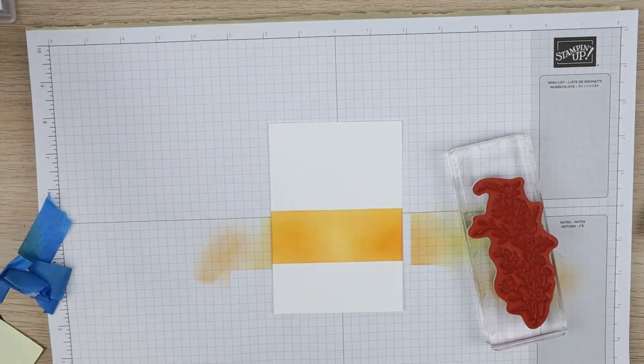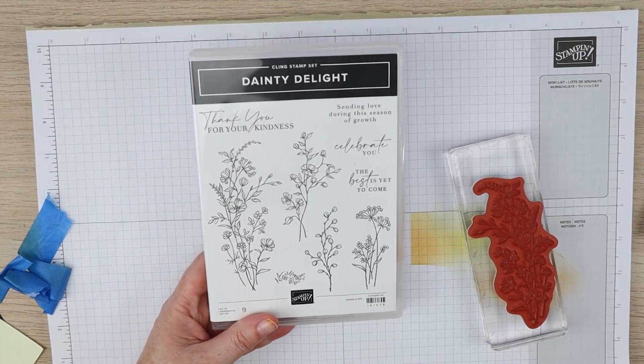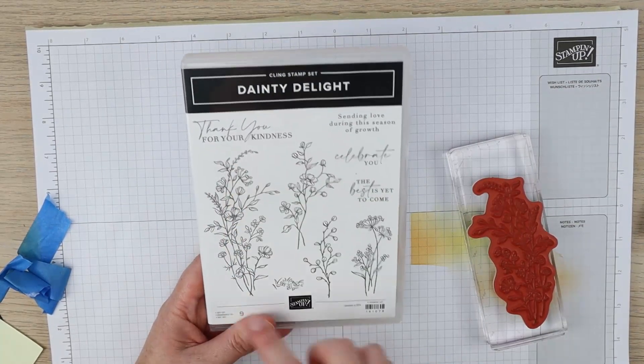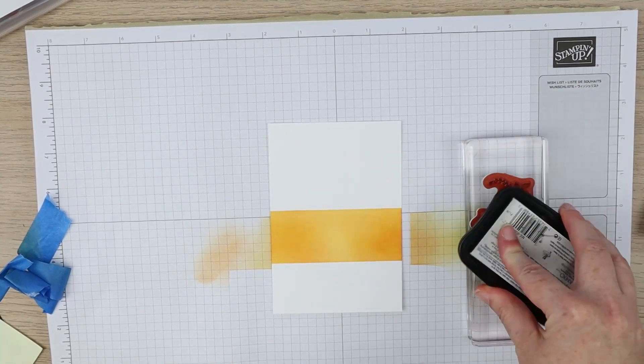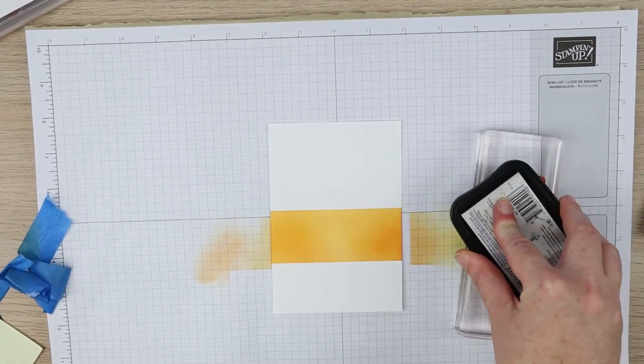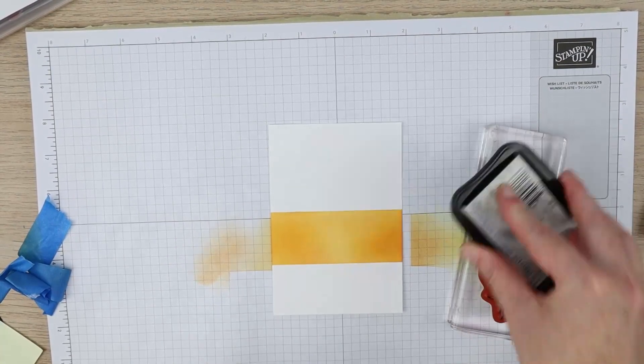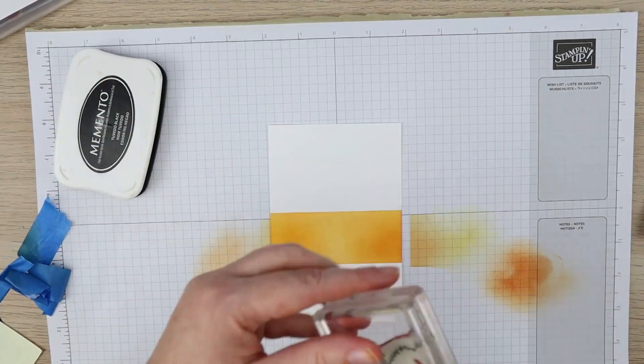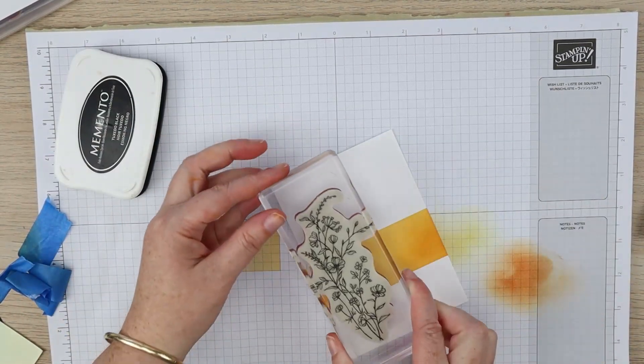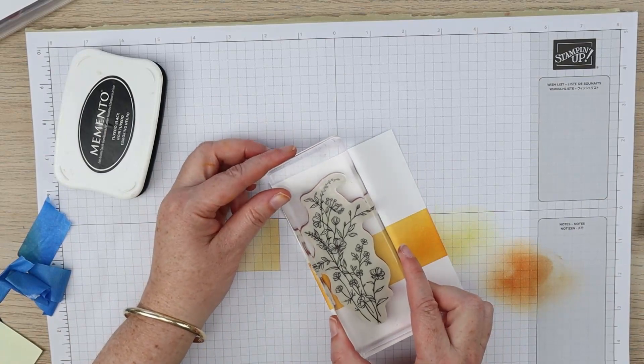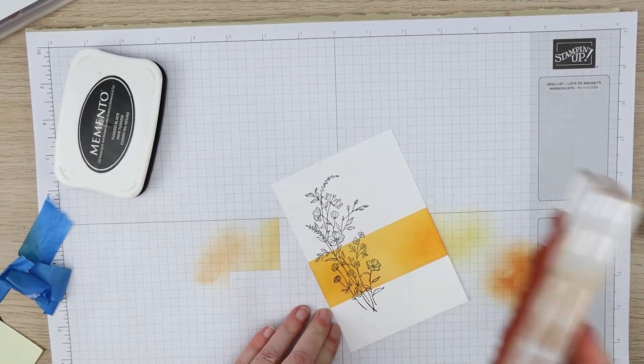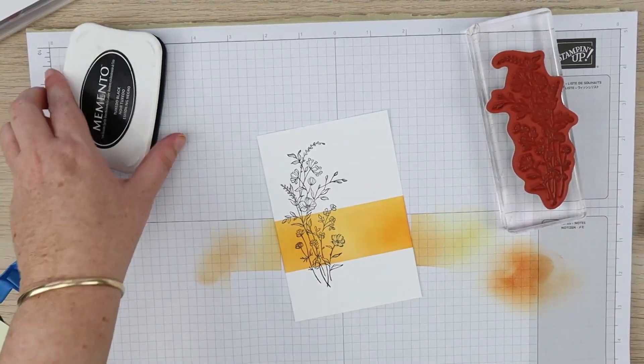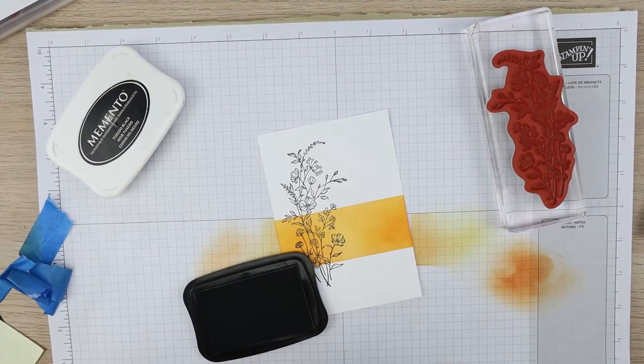Next I'm inking up my stamp and I'm using the Dainty Delight stamp set. I'm using my big image right here along with some black ink. I'm just going to ink this up and I'm going to stamp this on the left hand side, and then I've also got my greeting from the same stamp set.